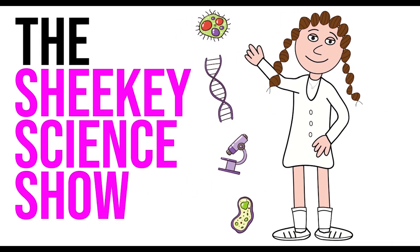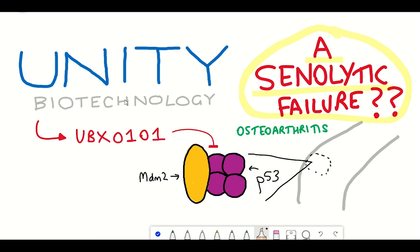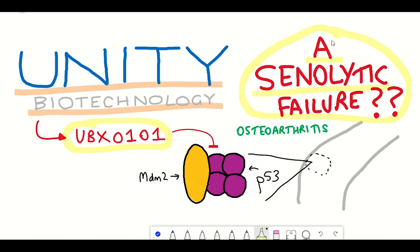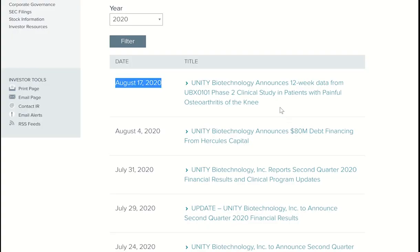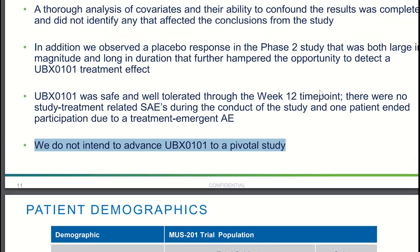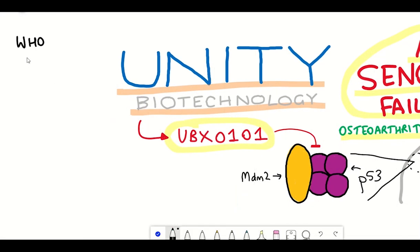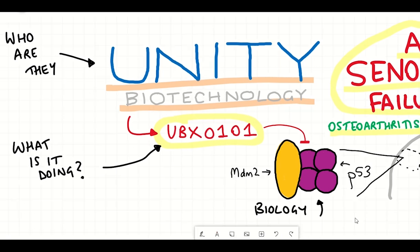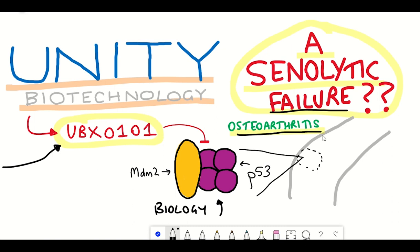Hello and welcome to the Shiki Science Show, where in this video we're going to talk about Unity Biotechnology and their recent update regarding their drug UBX-0101 and the results from their Phase 2 clinical study in patients with painful osteoarthritis of the knee. The main takeaway from this recent announcement is that they've decided not to advance UBX-0101 to a pivotal study. In this video I'll introduce Unity Biotechnology and what the company is trying to do, talk about UBX-0101 and the underlying biology underpinning it, and look at the results from their Phase 2 study.